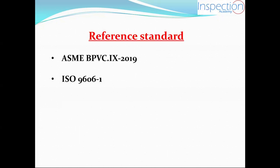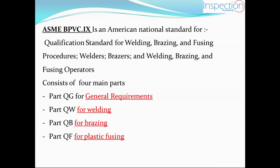First, let's start with ASME Code Section 9. It's an American national standard, generally a qualification standard for welding, brazing, and fusing procedures. It also covers welders, brazers, and welding operators — basically, how to qualify a welder.